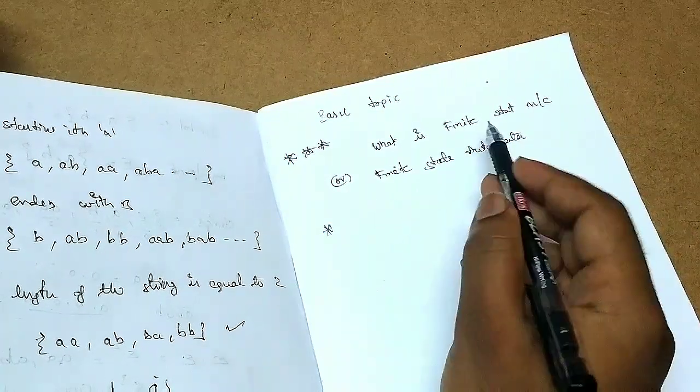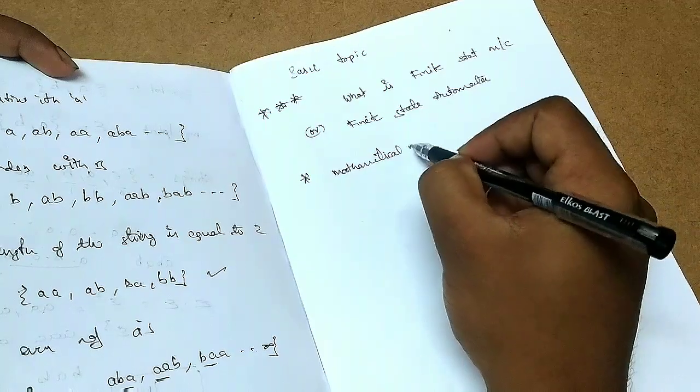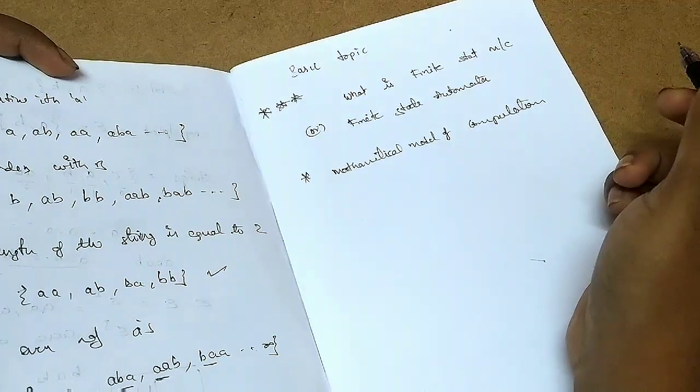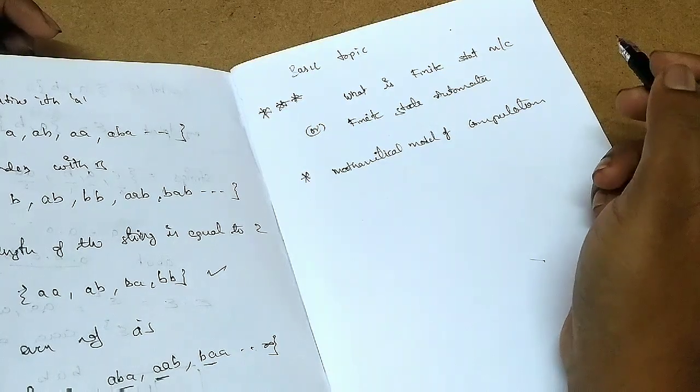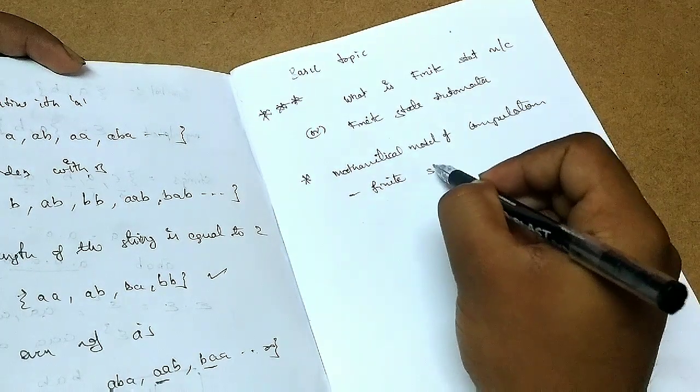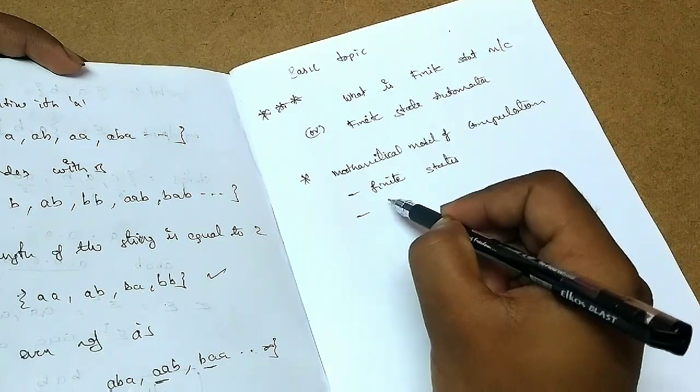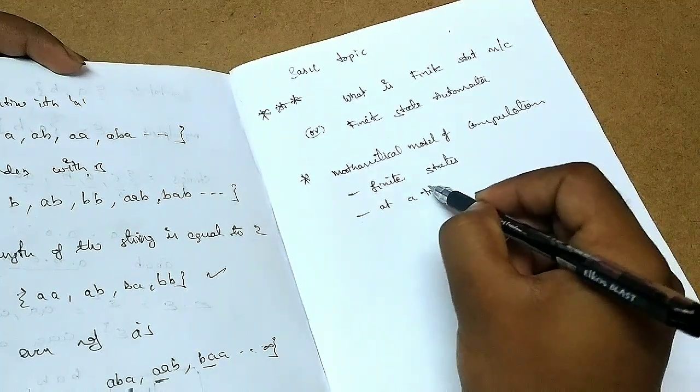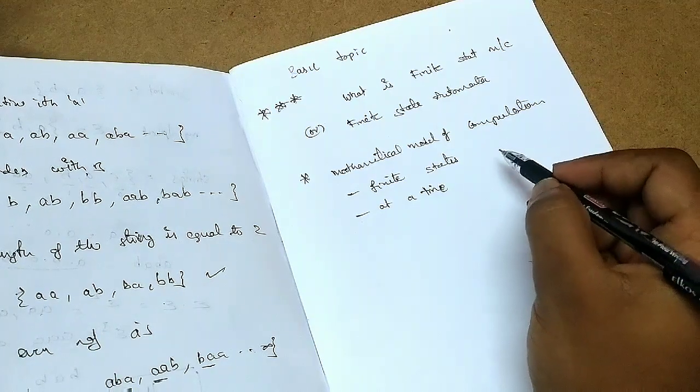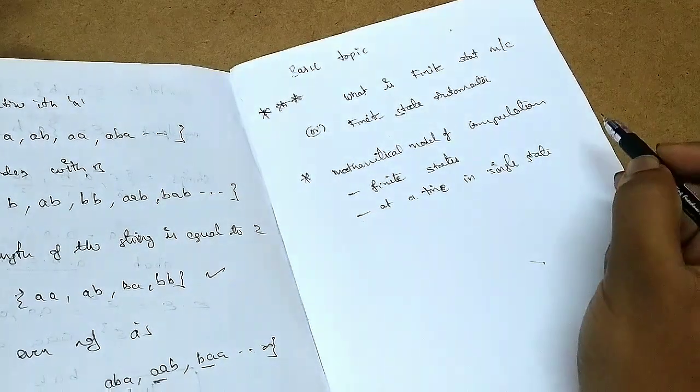Finite state machine is a mathematical model of computation. It is one of the models of mathematical computation which have finite states. At a time the control will be in one state only, in single state, control will be in single state.